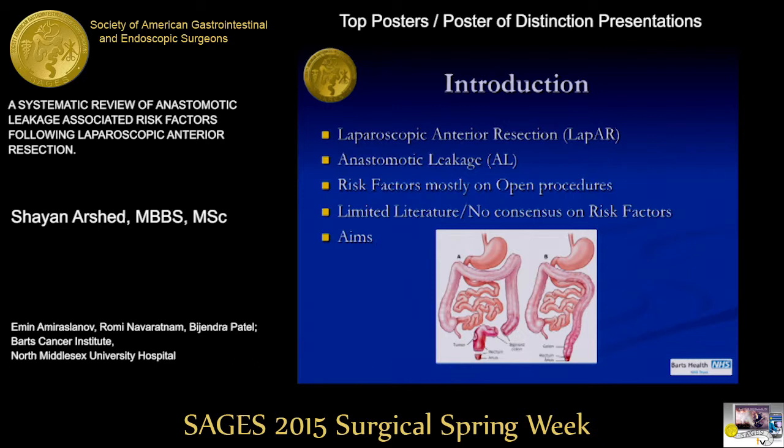Laparoscopic anterior resection, as we all understand, is a very standard procedure where we remove a portion of the rectum, including the sigmoid, laparoscopically. Anastomotic leakage is a very dire complication which, if not caught in time, can be life-threatening.